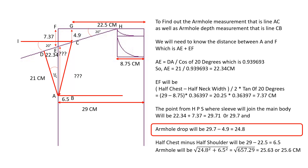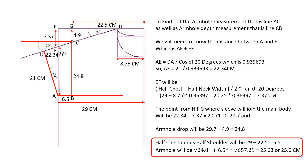The armhole drop is simple to calculate: 29.7 minus the shoulder drop of 4.9 equals 24.8 centimeters. To calculate the armhole we use the Pythagorean theorem and take the square root of the sum of the square of (half chest minus half shoulder) and the square of armhole depth. Half chest minus half shoulder is 29 minus 22.5, equal to 6.5. Armhole depth is 24.8. Square of 24.8 equals 615.04, square of 6.5 equals 42.25. The square root of 657.29 is 25.64, therefore the armhole length will be 25.6 centimeters.